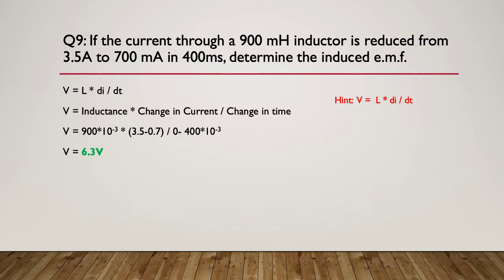And here's our worked answer. So the voltage is the inductance in henries multiplied by the dI, change in current, divided by dt, the change in time. And for us it's 9 times 10 to the minus 3, change in current we dropped from 3.5 to 700 milliamps, so 3.5 minus 0.7, and we did that in 0 seconds to 400 milliseconds, or 400 times 10 to the minus 3. And if we multiply all of that out together and divide by the 400 times 10 to the minus 3, we'll end up with 6.3 volts.